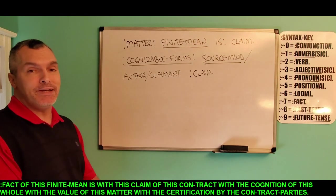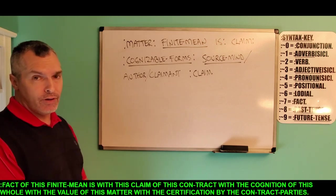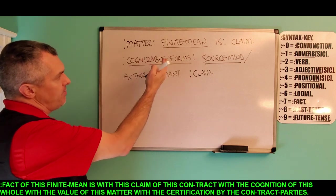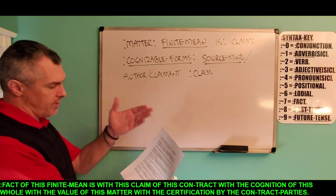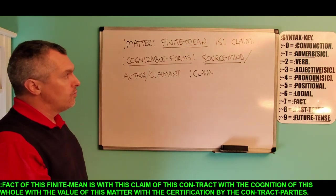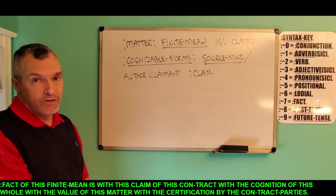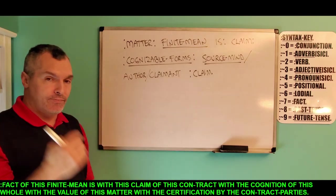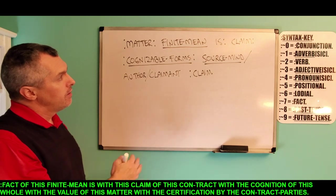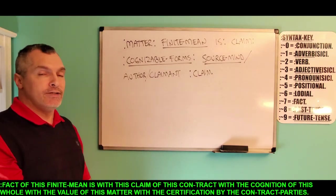Now we move on to 'matter.' For the matter of this finite mean is with the claim of the cognizable forms of the source mind and author and claimant by this claim. The claim of this finite mean of matter is concerned with the cognizable forms — forms we can understand: this paper, this board, the words I'm speaking — possessive of the source mind, author, and claimant by the claim. Backwards: for the claim of the source mind, author, claimant is with the understandable forms of the claim with the finite mean by the matter. A matter is a form of something the author, claimant, and source mind can understand.